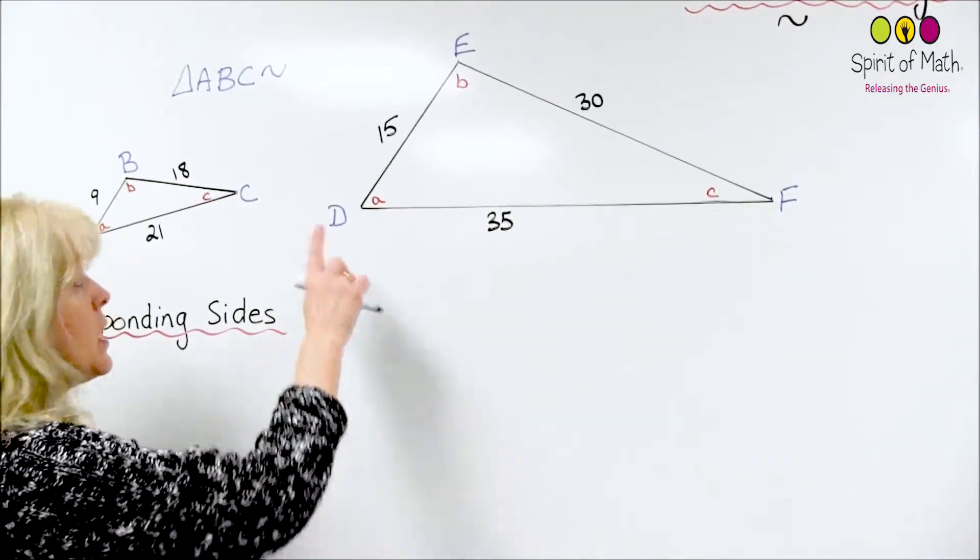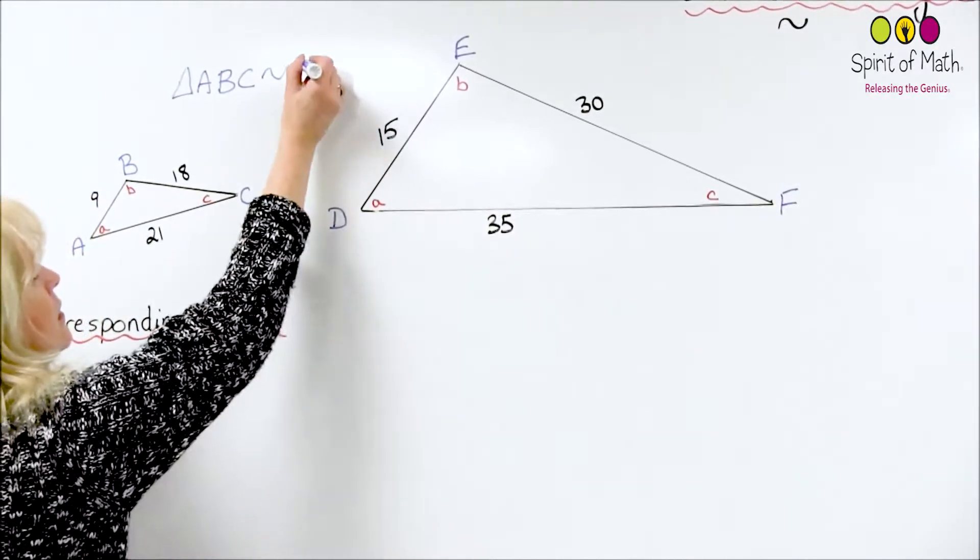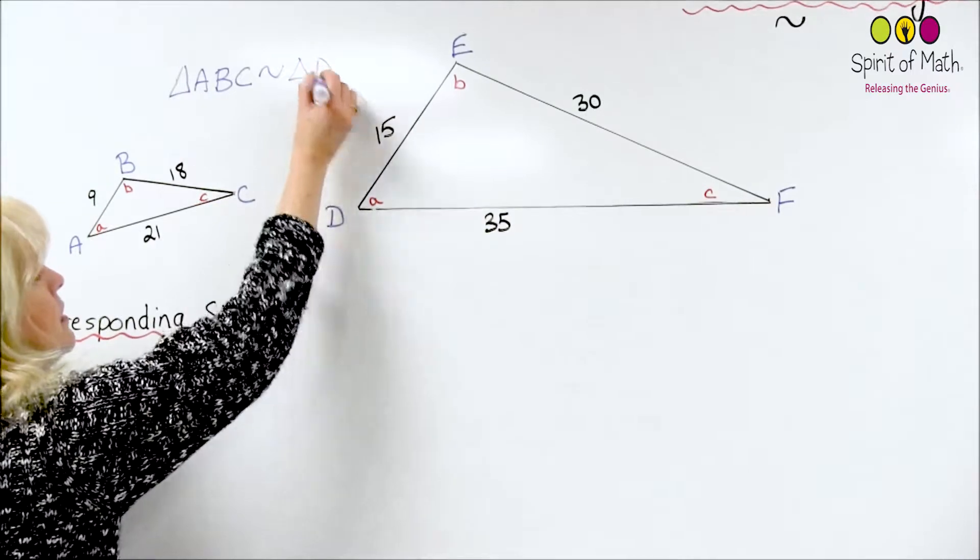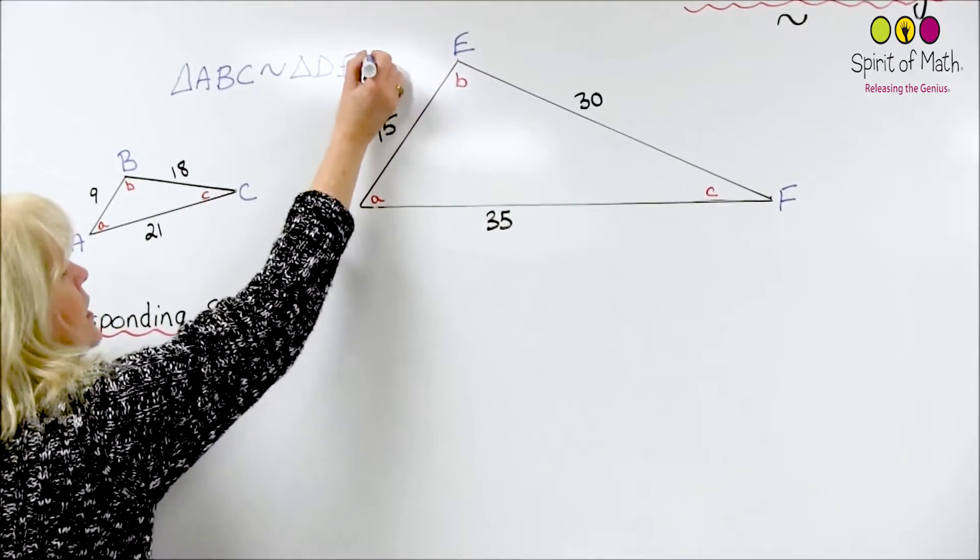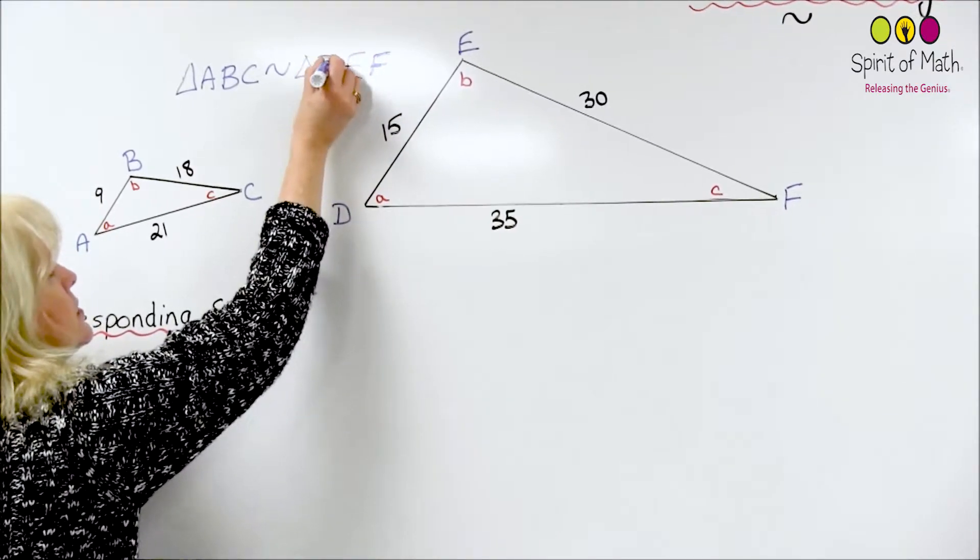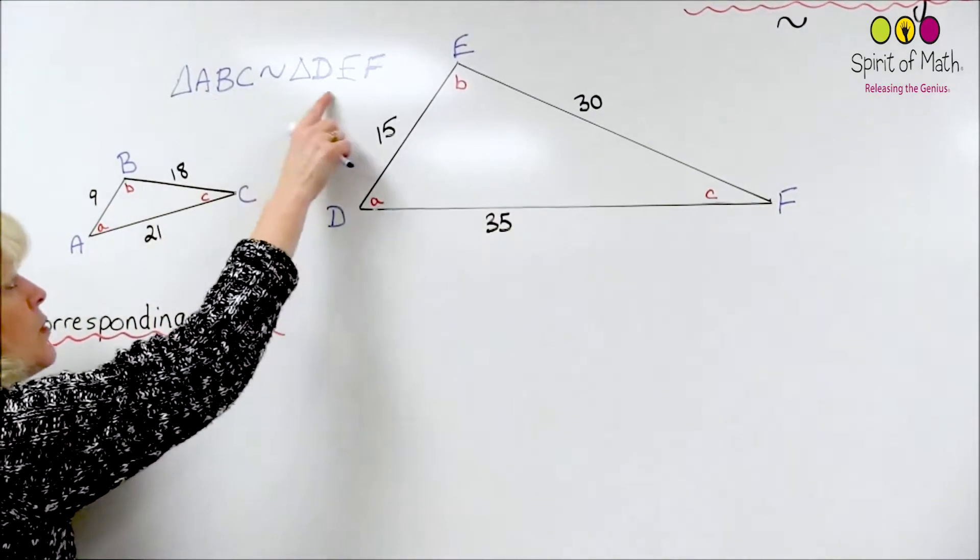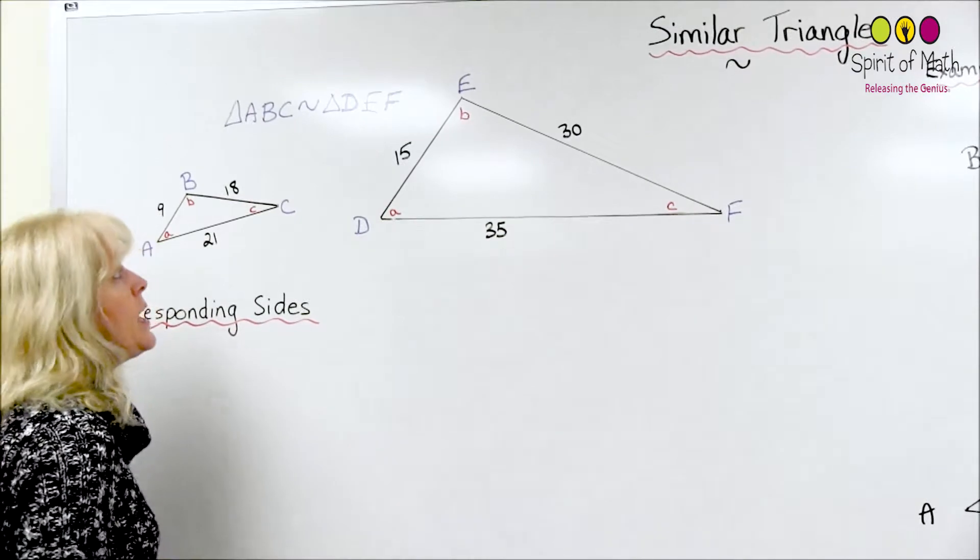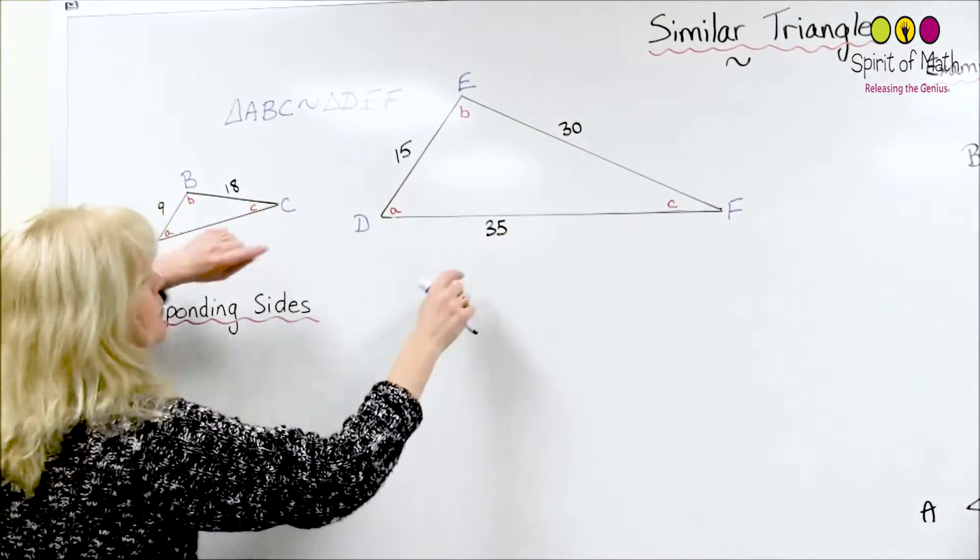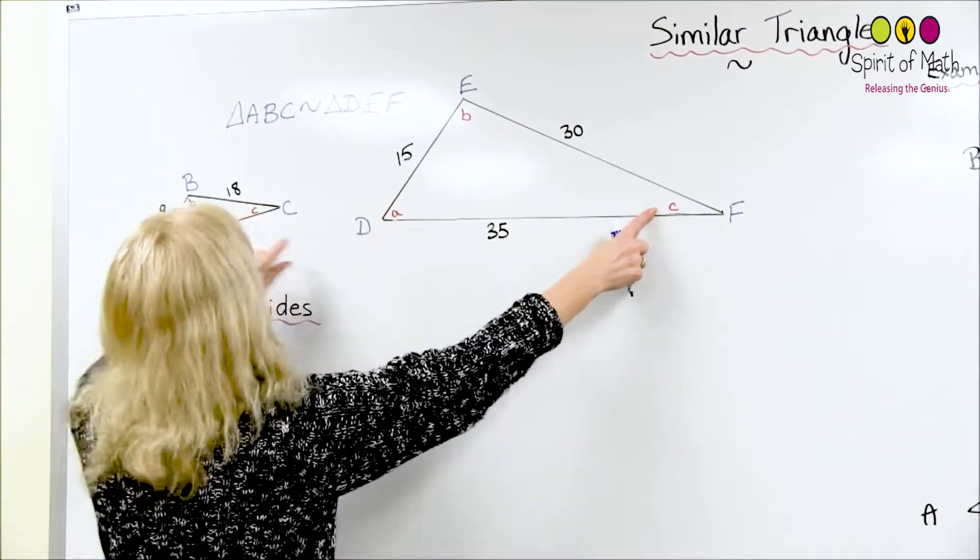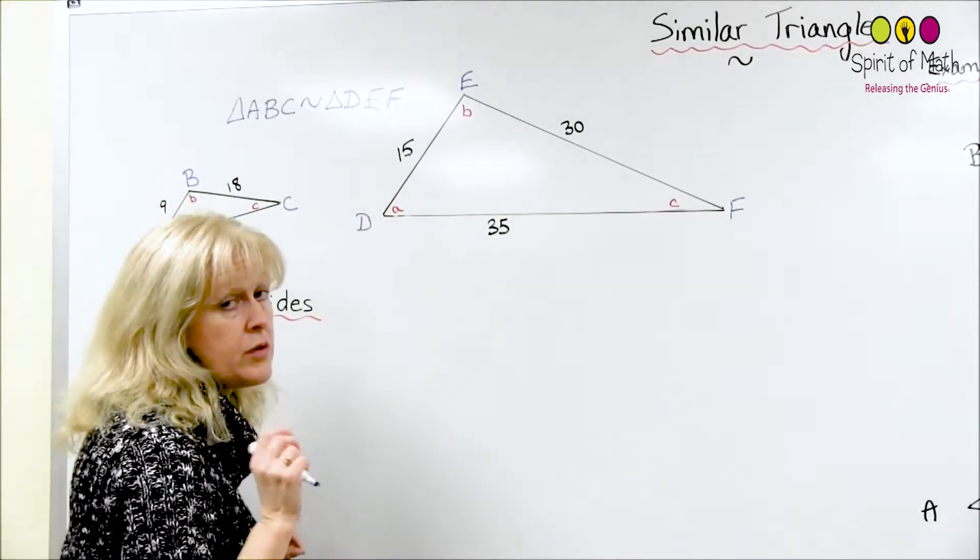So, again, A, B, C. So A goes with D, so you say it's similar to D, B goes with E, and C goes with F. And that's how you name that these two triangles are similar. You always have to look at the angles and have them corresponding to those vertices and the labels of the vertices, and you know that you've got the same A, B, C. If this happened to be an A and this was a C, then you would be naming it like this instead. So I just want to make sure that you understand that.